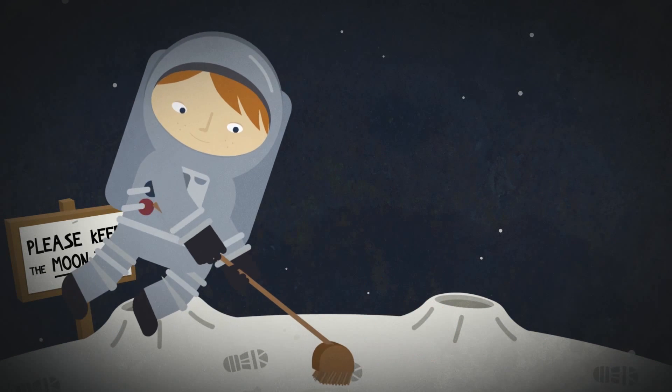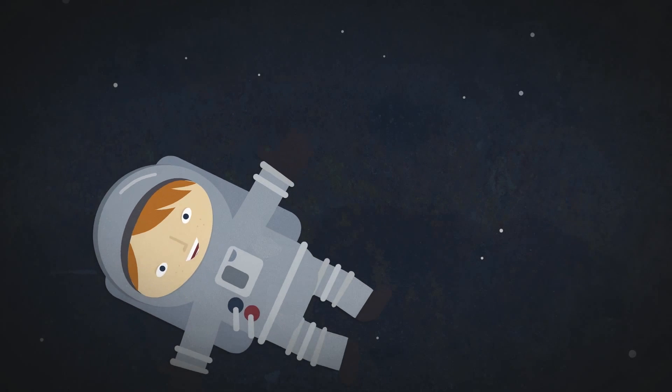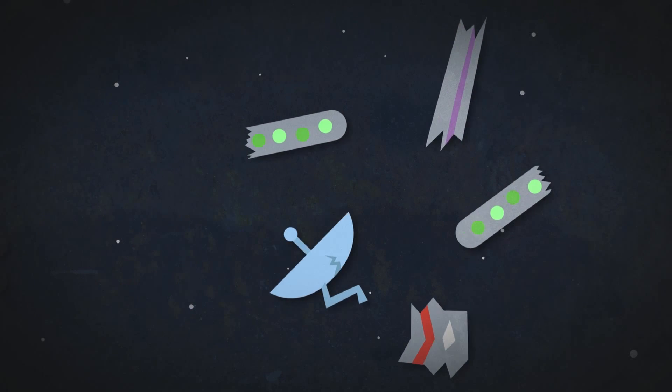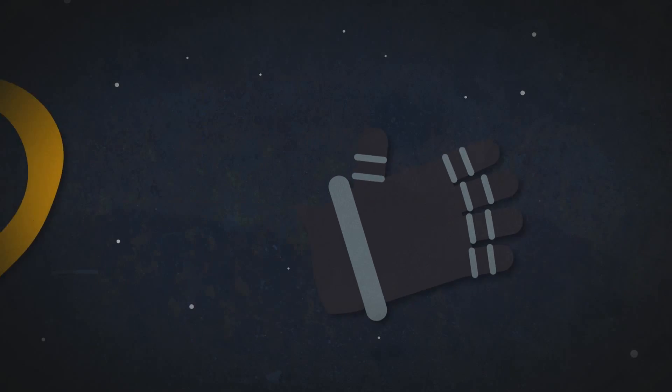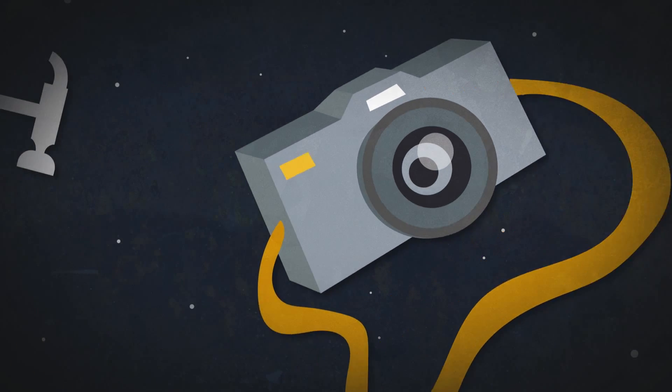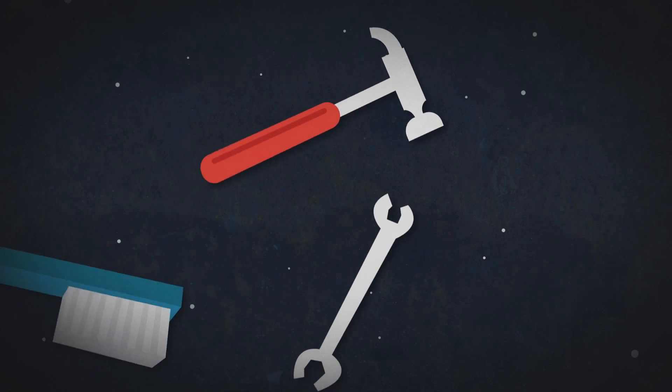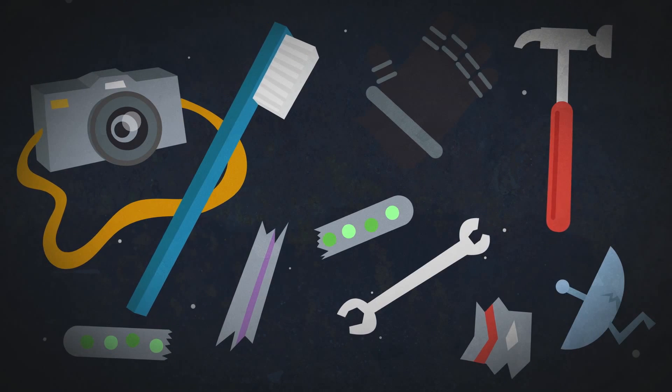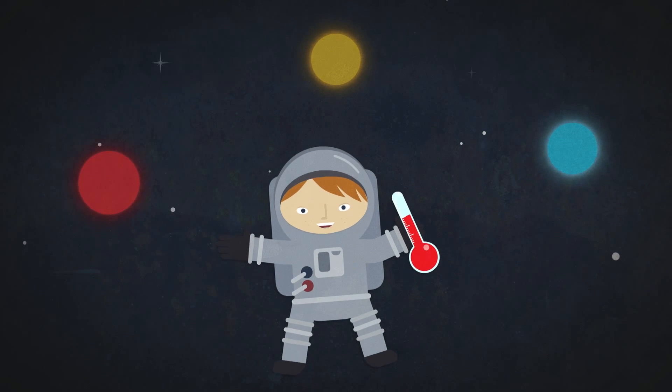Next, space is full of rubbish, and it's mostly because of us. Ever since we started exploring space, we've been leaving things behind. Bits of old rockets, an astronaut's glove, a camera, tools, and a toothbrush. They're all floating around up there somewhere. Maybe the next mission to blast off should take some bin bags and do some tidying up.